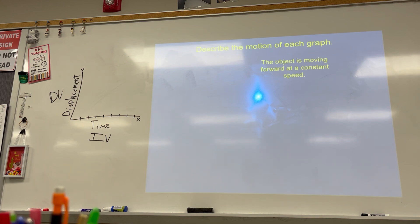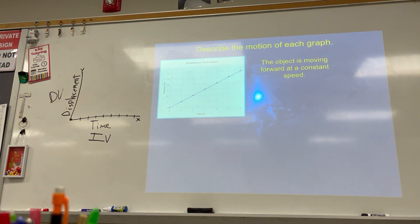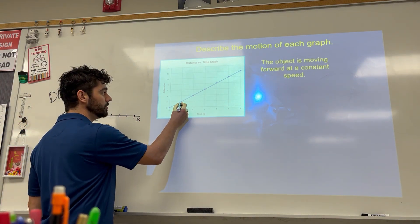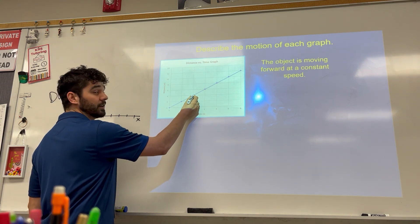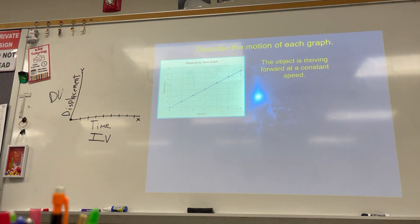Zero — we're starting at zero displacement. And then when the timer starts, if I'm going constant speed, what that means is I'm going the same distance every second. Which means that this graph would look like a straight line. So in this graph, in one second I go two meters, in another second I go two more meters, in another second I go two more meters. Constant speed means I'm going the same distance every second.